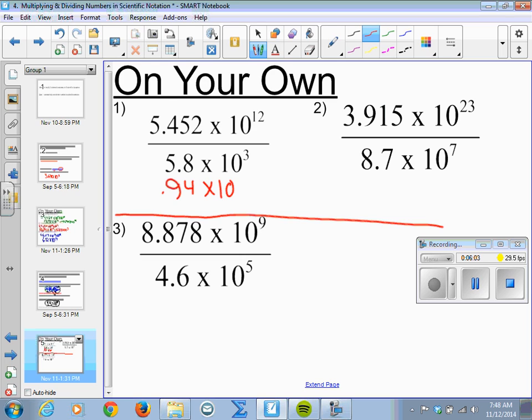It's not scientific notation. Decimal point moves one spot over. 9.4 times 10 to the 8th power. There's that one.